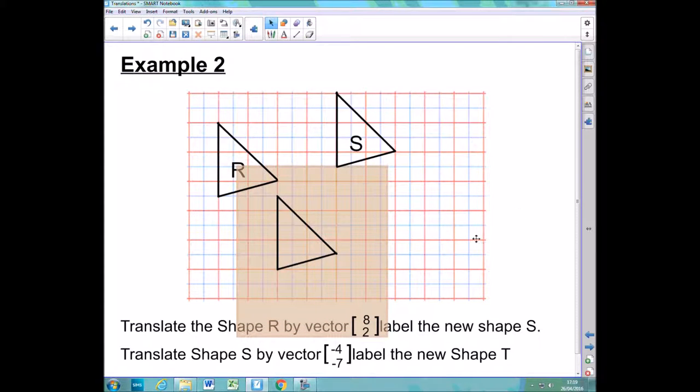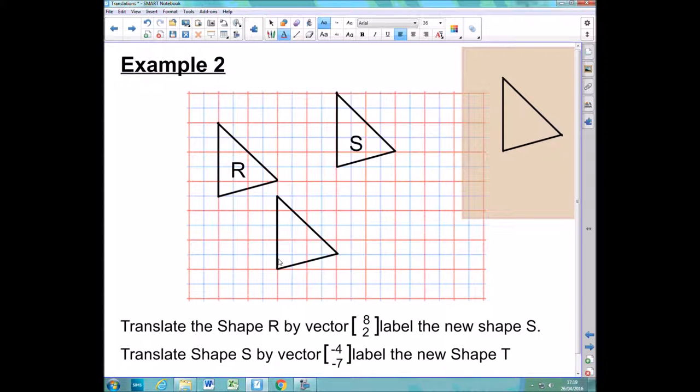So again, I'm going to be really careful now to draw my shape in that exact place by gradually removing my tracing paper and drawing those lines in. After I've done that, I can remove my tracing paper and I'm asked to label this T.